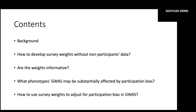Here's a table of contents for my presentation today. After providing some background about my project, I will discuss each of four questions I'm trying to answer: how to develop survey weights with limited information on non-participants, whether our survey weights are informative, what phenotypes GWAS may be substantially affected by participation bias, and how we can use these developed survey weights to adjust for participation bias in GWAS.